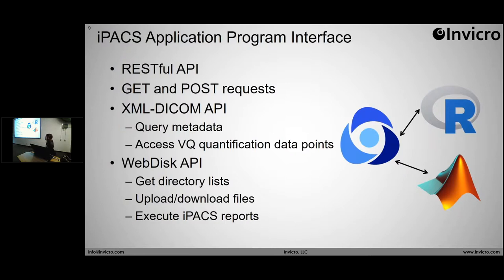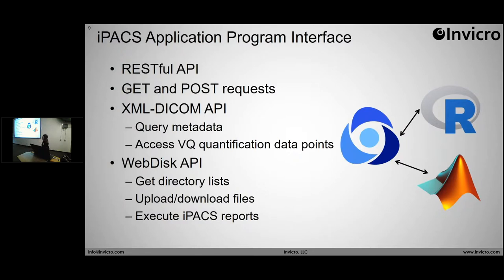Lastly, the IPACS API — which, for non-developers, means the IPACS application program interface. In layman's terms, that means we have a set of tools that allows us to run the IPACS within other applications. You can make GET and POST requests, meaning you can get and post data from and to the IPACS within a different application — for example, R or MATLAB. The API allows you to query metadata, access VQ quantification data points associated with ROIs, get directory lists from the IPACS web disk, upload and download to that directory, and also execute IPACS reports.